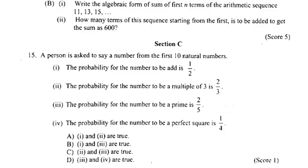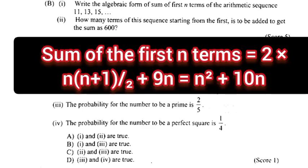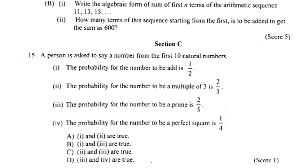Or B. 1. Write the algebraic form of sum of first n terms of the arithmetic sequence 11, 13, 15 etc. 2 into n of n plus 1 by 2 plus 9n equal n square plus 10n.